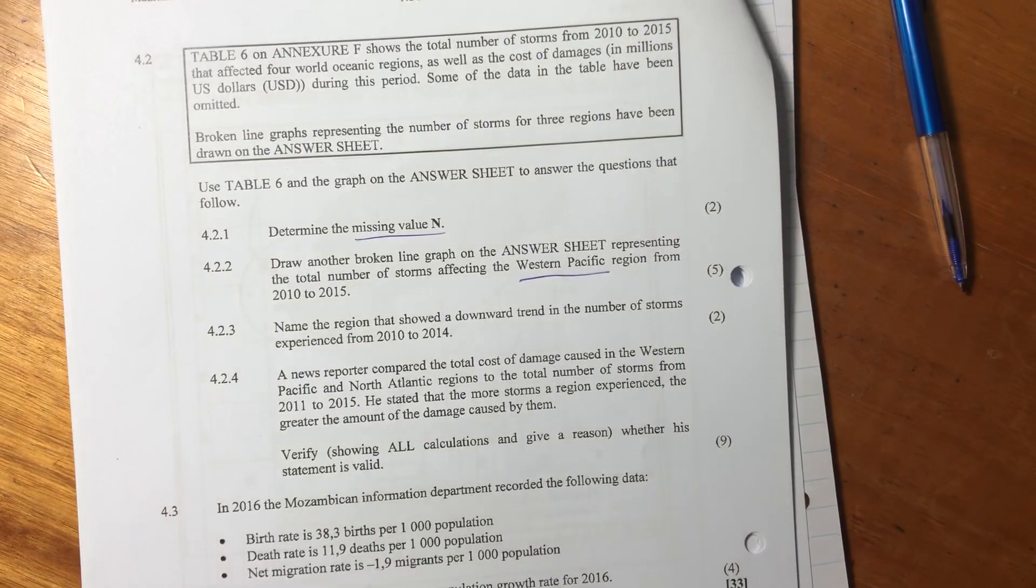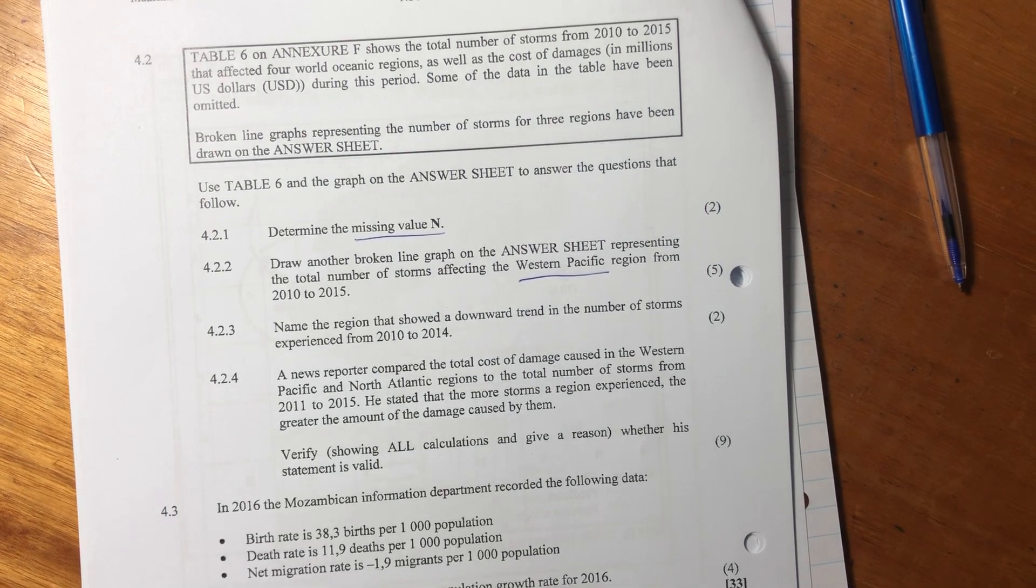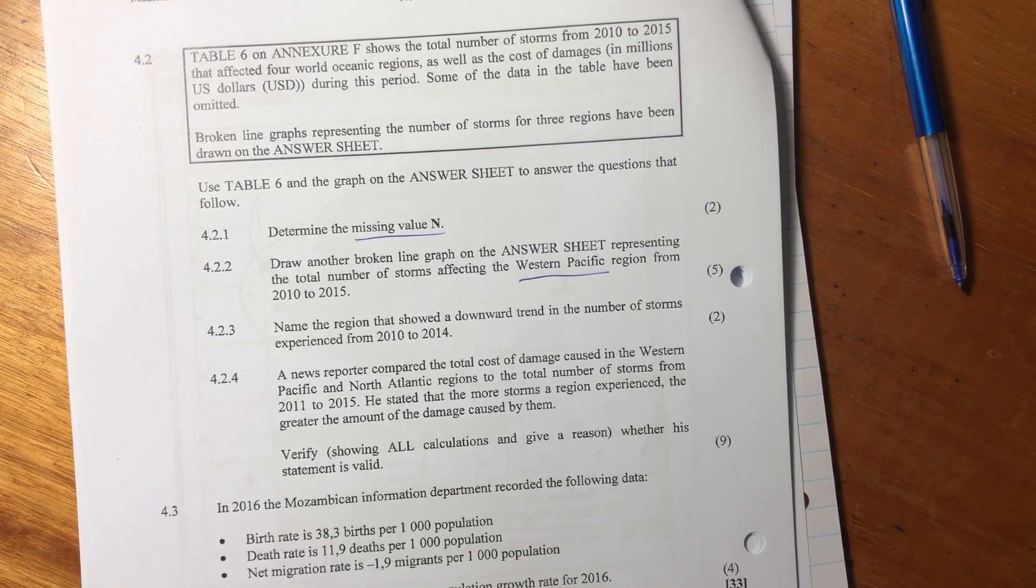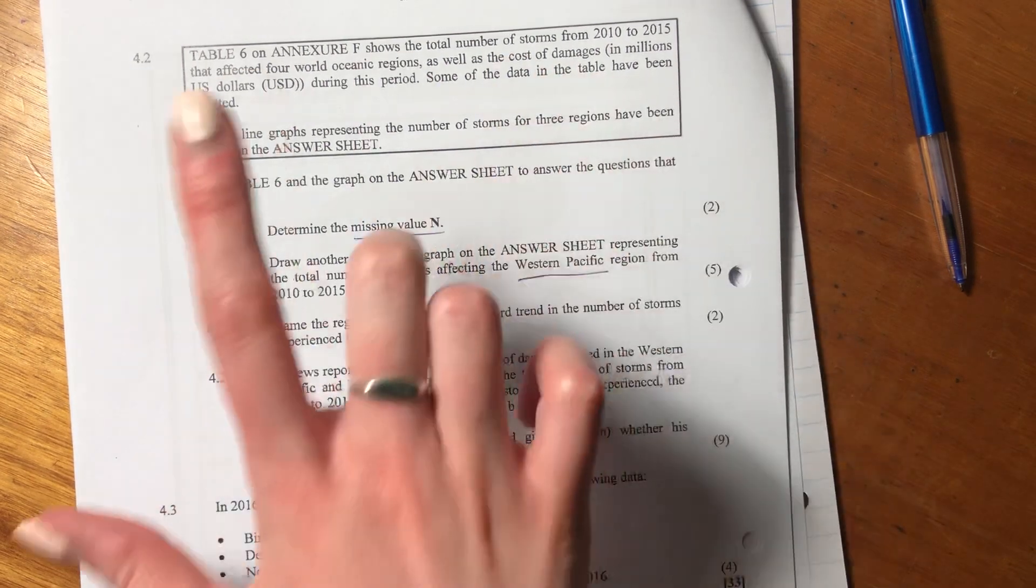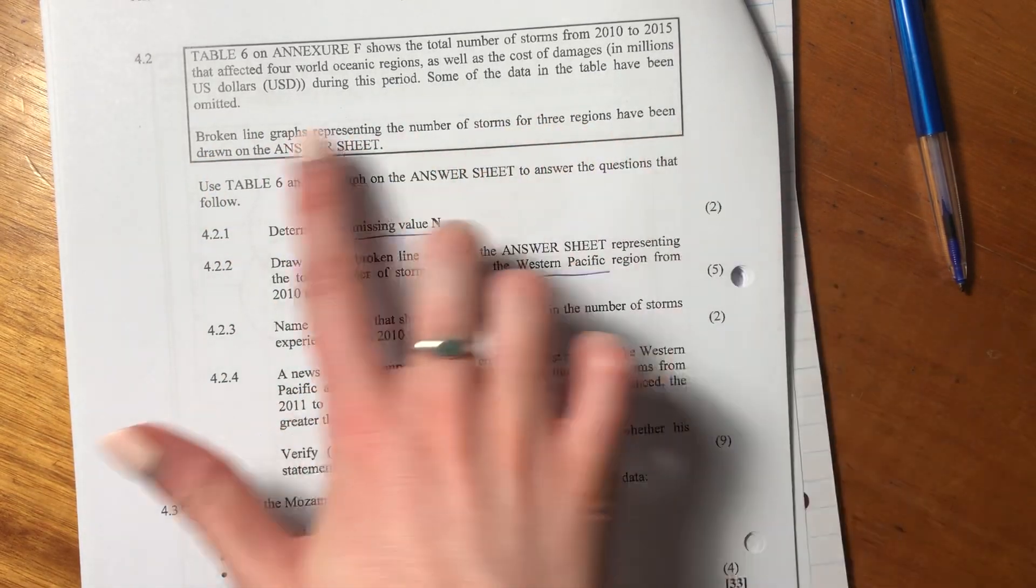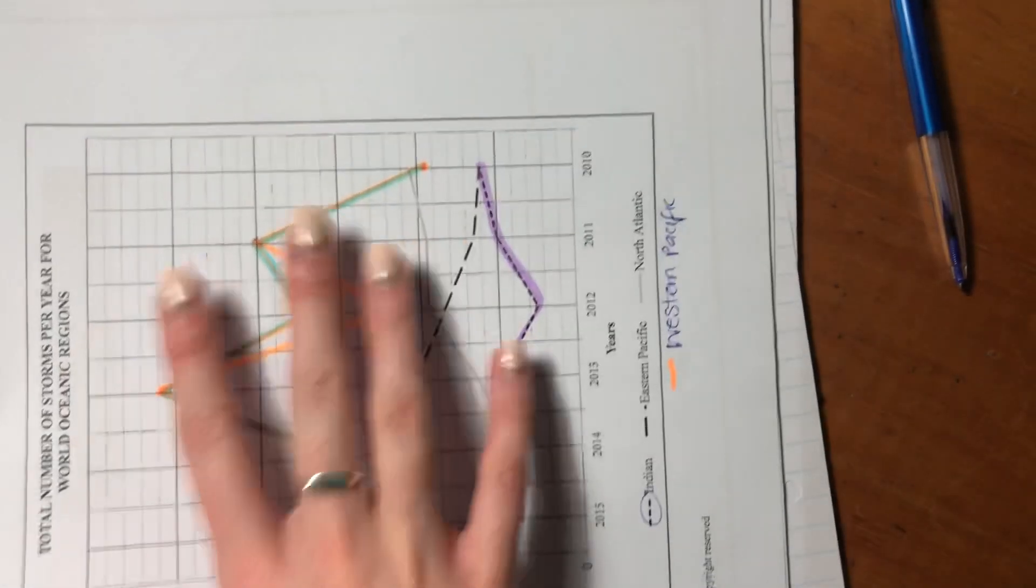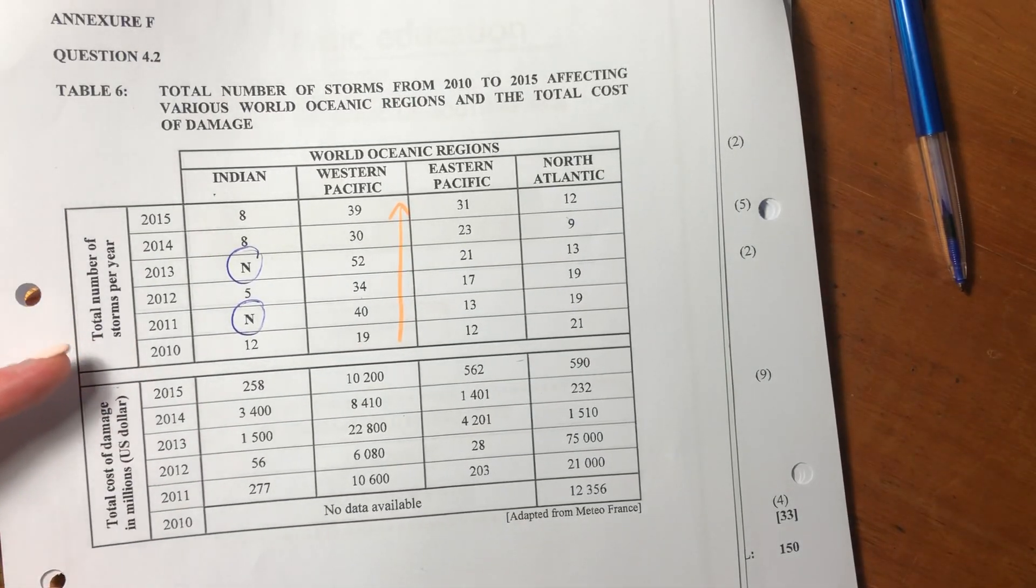Hey guys, so we're moving on to question 4.2. Question 4.2 says, Table 6 on Annex F shows the total number of storms from 2010 to 2015 that affected four world oceanic regions, as well as the cost of damages in million US dollars during this period. Some of the data in the table have been omitted. Broken line graphs representing the number of storms for three regions have been drawn on the answer sheet. So we have graphs over here, and we also have the annexure. So we're using two different pieces of information. Don't get confused, just realize we're going to be using two different pieces.